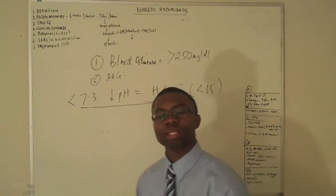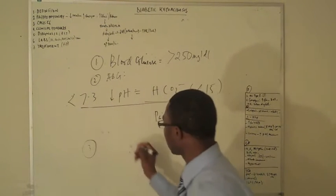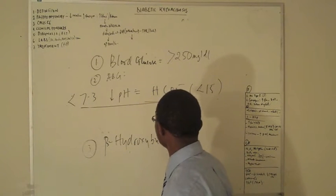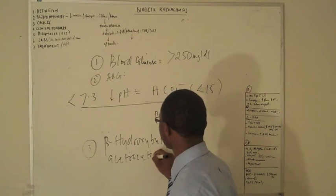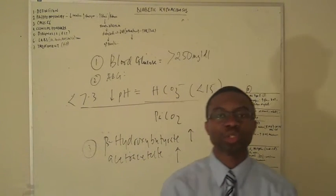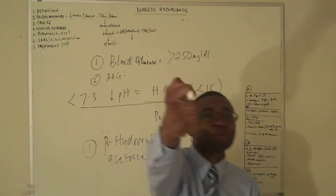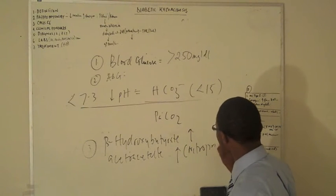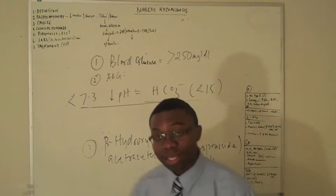Guess one more thing. I'm like, yo doc, I need to know the ketone levels. Number three. I order ketone levels. I check beta-hydroxybutyrate, elevated. Acetoacetate, elevated. Board question. What agents do we use to measure acetoacetate? Nitroprussite agents, baby. I got you. There you go. Nitroprussite agents. That's what we use to measure acetoacetate in the lab.